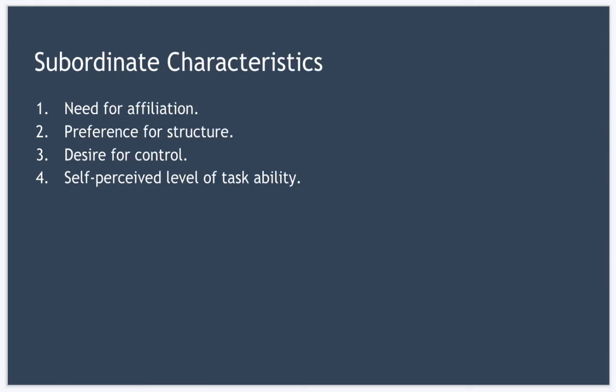Now the next part of the model is subordinate characteristics. What are your subordinates like? And how well your leadership style works is always going to depend on your subordinates. Now essentially the effectiveness of each leadership style will be contingent on the characteristics of your subordinates. Now the model identifies four different subordinate characteristics that you can see here: need for affiliation, preference for structure, desire for control, and self-perceived level of task ability.